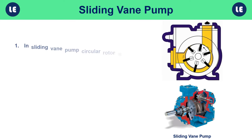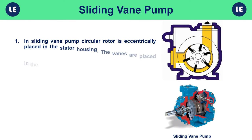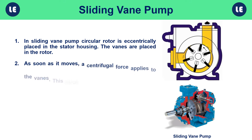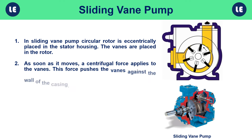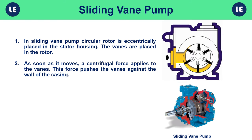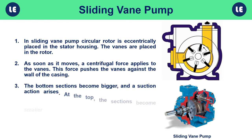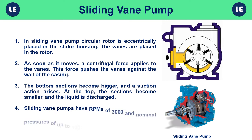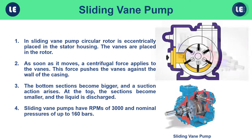In a sliding vane pump, a circular rotor is eccentrically placed in the stator housing. The vanes are placed in the rotor, and as soon as it moves, centrifugal force pushes the vanes against the wall of the casing, forming chambers between the vanes. At the bottom, sections become bigger and a suction action arises; at the top, sections become smaller and the liquid is discharged. Sliding vane pumps have RPMs of 3000 and nominal pressures of up to 160 bar.